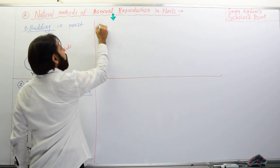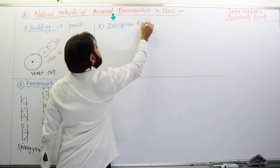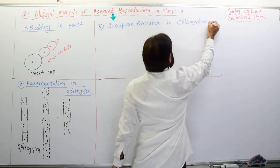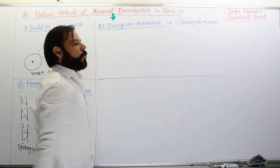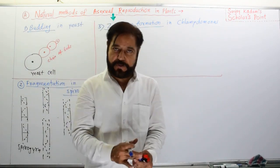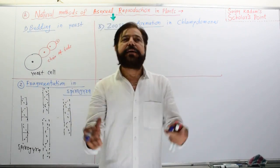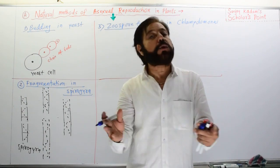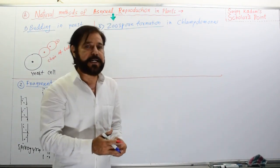The third method of natural asexual reproduction is zoospore formation. In the case of Chlamydomonas, which is a microorganism, motile movable spores called zoospores are formed. These spores have flagella — hair-like structures by which they show movement. That is why they are called motile spores. 'Zoo' means animal, so zoospores means moving spores, unlike fungi and other lower plants which form non-motile spores. In Chlamydomonas, zoospores are motile, flagellated spores.